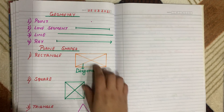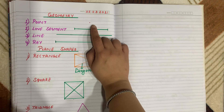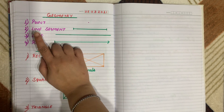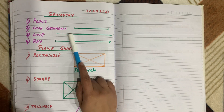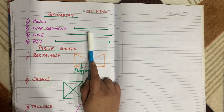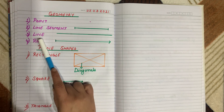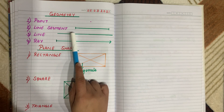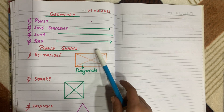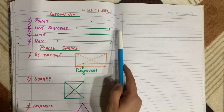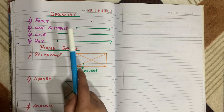In last class we learned about what is a point — a point shows the exact location. Next, a line segment is a line of fixed length and it has two endpoints. A line is a group of points which does not have any endpoint, meaning it can be extended in either direction.